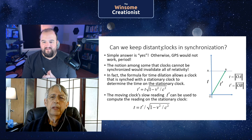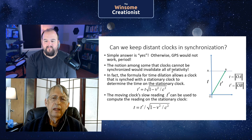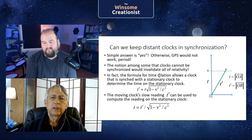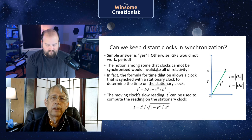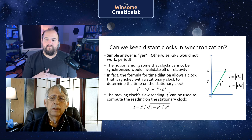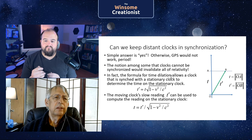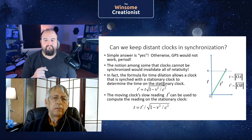Some people keep asking: can we synchronize distant clocks? The answer is yes — because otherwise GPS would not work, period. And the notion that remote clocks cannot be synchronized would invalidate all of relativity. For example, everybody talks about time dilation: if a moving clock T-prime runs slow by a certain factor relative to a stationary clock, that depends upon the invariant interval.